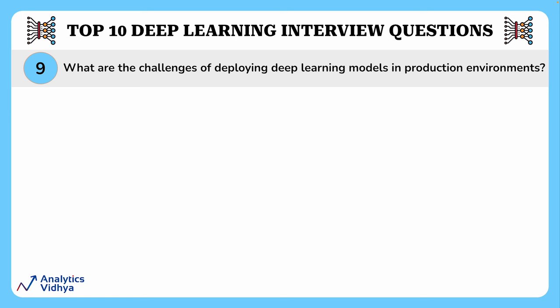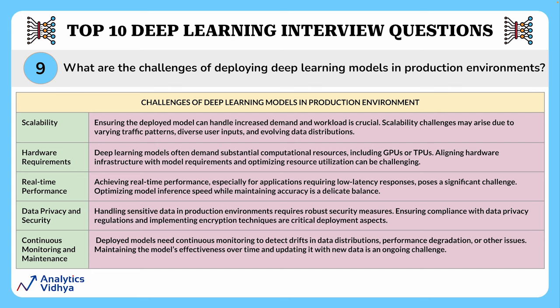This question focuses on challenges deep learning models face in production environments. Deploying deep learning models in production comes with unique challenges that require careful consideration and strategic solutions. The first is scalability — ensuring the deployed model can handle increased demand and workload is crucial, and scalability challenges may arise due to varying traffic patterns, diverse user inputs, and evolving data distributions. Next is hardware requirements — deep learning models often demand substantial compute resources including GPUs and TPUs. Then comes real-time performance, especially for applications requiring low latency responses, which poses a significant challenge.